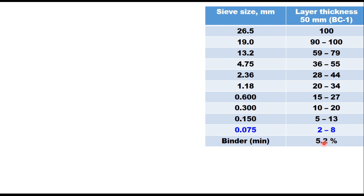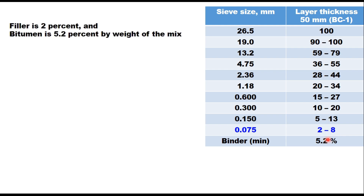Let us take 5.2 as the binder content, and let us say you have the filler content at 2 percent or 8 percent — it can be in between these two also. Let us see the limit of this filler-bitumen ratio. If you take filler as 2 percent and bitumen as 5.2 percent, then this filler-bitumen ratio will be calculated accordingly.